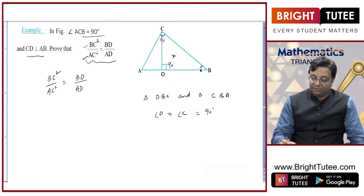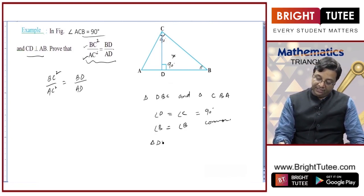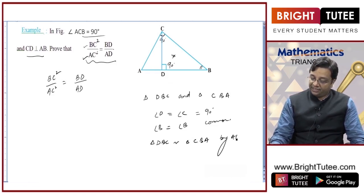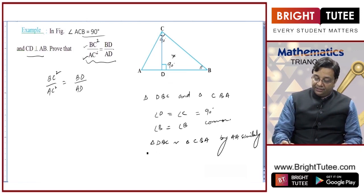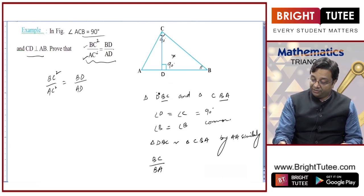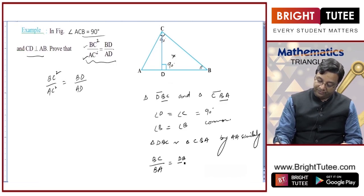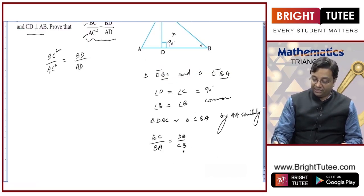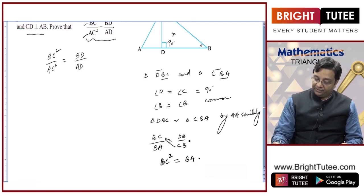Angle B is common in both triangles, so angle B equals angle CBA, which is common to both. Therefore, triangle DBC is similar to triangle CBA by angle-angle similarity. Since these are similar, BC/BA = DB/CB, and cross-multiplying gives BC² = BA · DB.